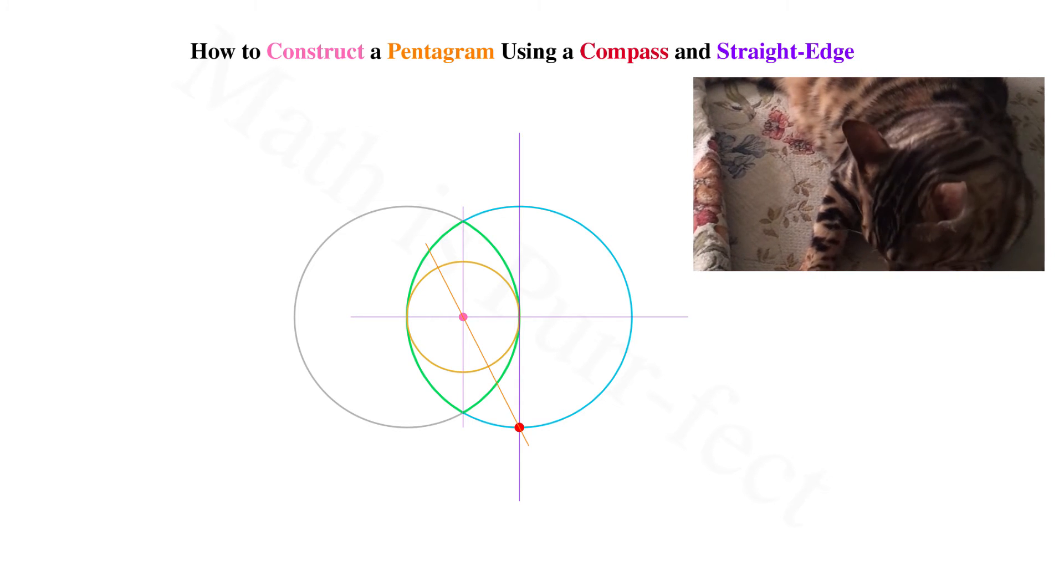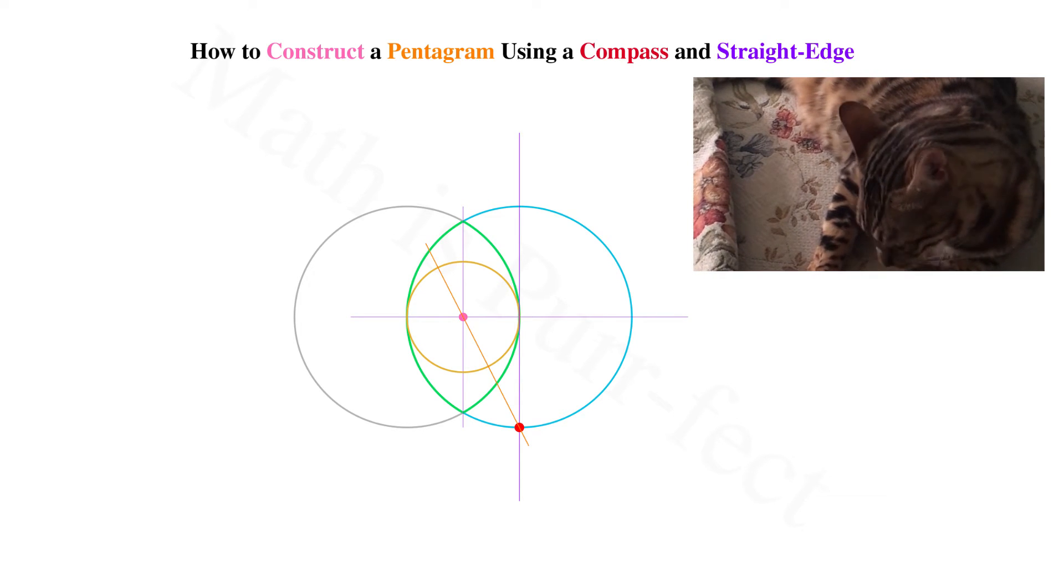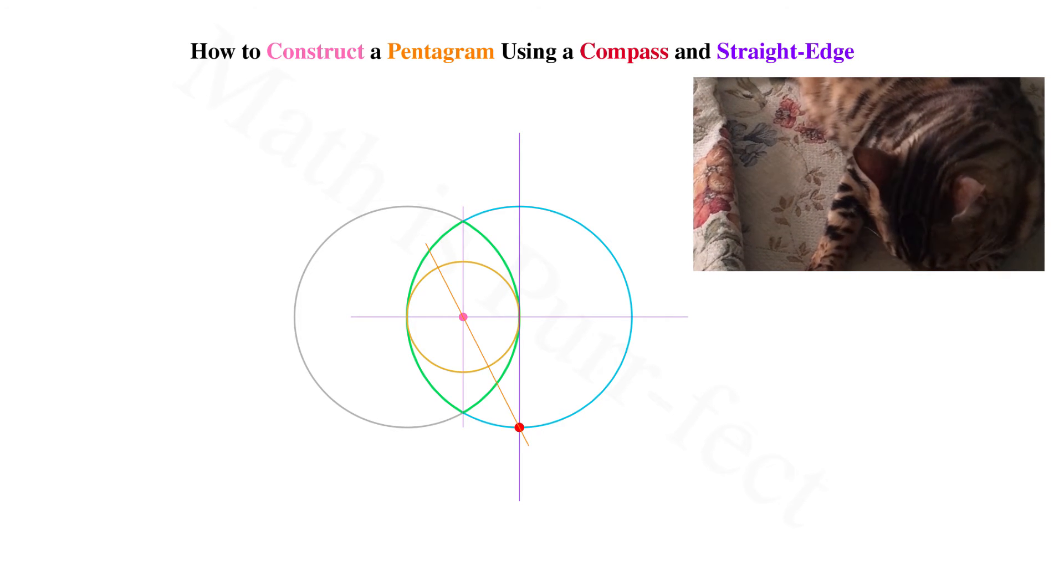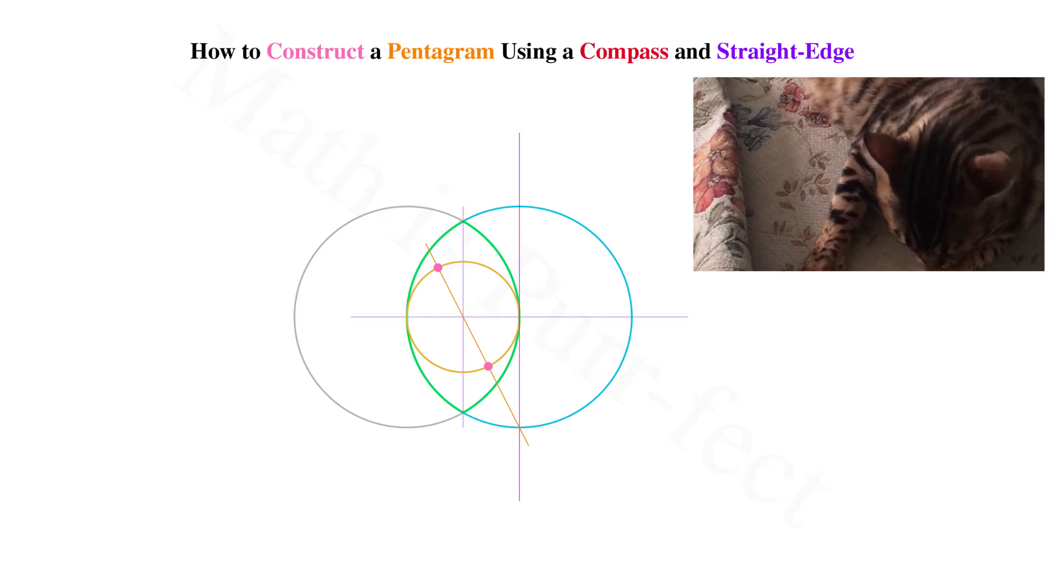Draw a line from the red dot through the center of the circle inside the Vesica Pisces, making sure to intersect its circumference twice. Let's mark these intersections in pink.